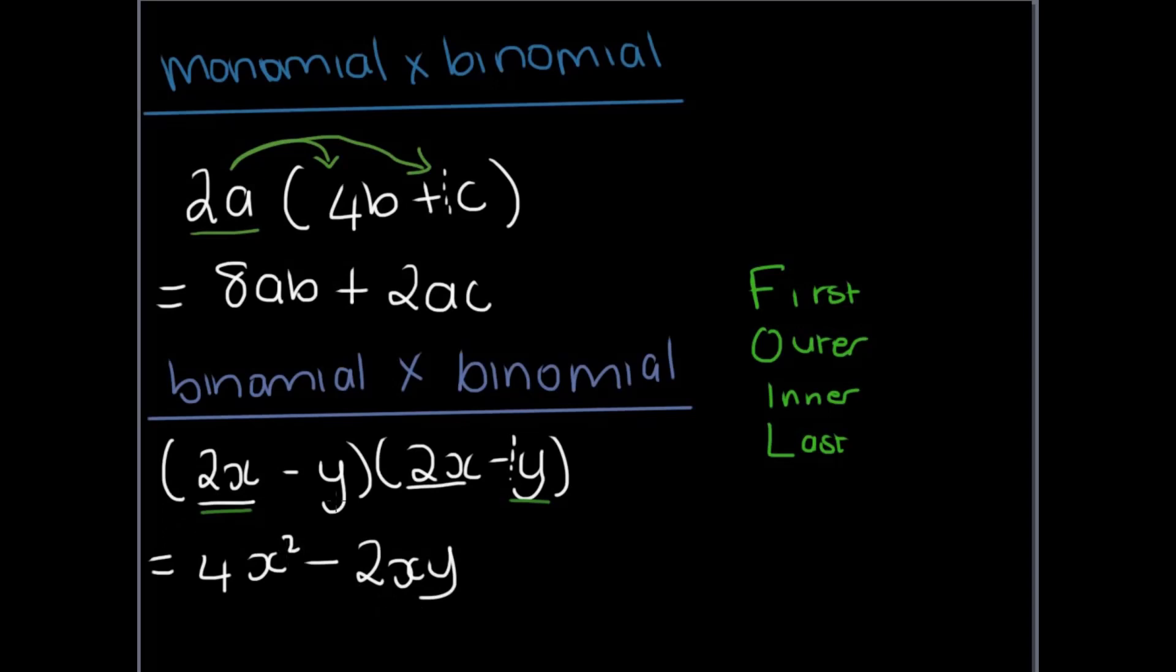Then we do the inner terms which is y and 2x. So that is negative times a positive which is negative. 2 times 1 is 2 and x times y is xy. And then the last terms are y and y. This negative multiplied by this negative gives a positive. And then y times y is y squared.